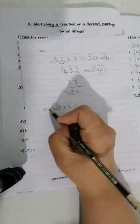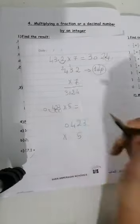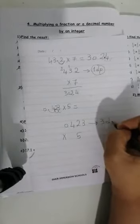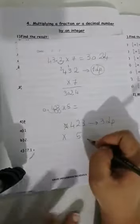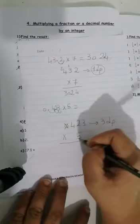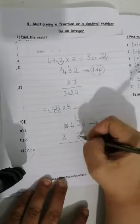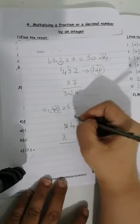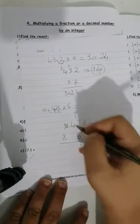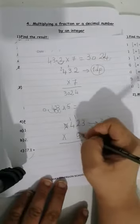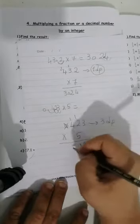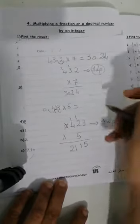How many decimal places? 1, 2, 3. So I will write beside it, 3 decimal places. And this 0 I don't need it so cross it. Then start solving. 5 times 3, 15. 5 down, 1 up. 5 times 2, 10 plus 1, 11. 1 down, 1 up. 5 times 4, 20.